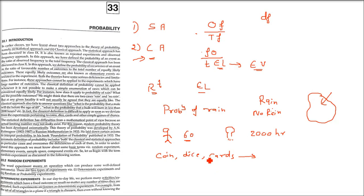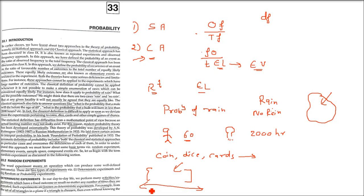The classical approach, whenever we deviate from coins, dice, cards and other simple games of chance, we don't get the things we want. The statistical definition also has difficulties from a mathematical point of view because an actual limiting number may not really exist. For this reason, modern probability theory has been developed axiomatically — because sometimes the actual limiting number may not really exist or we don't know it.